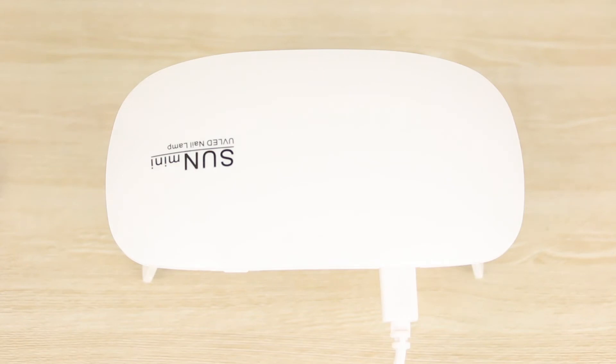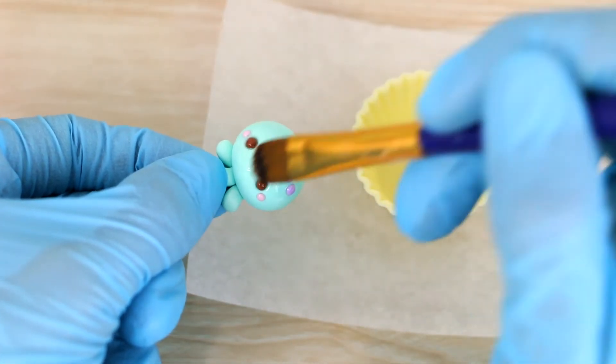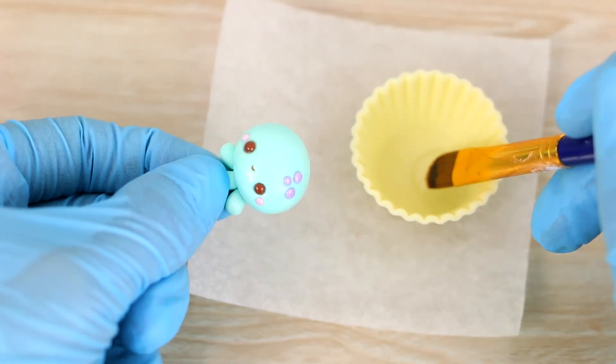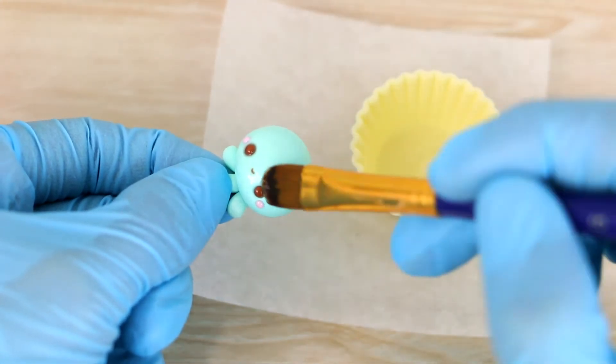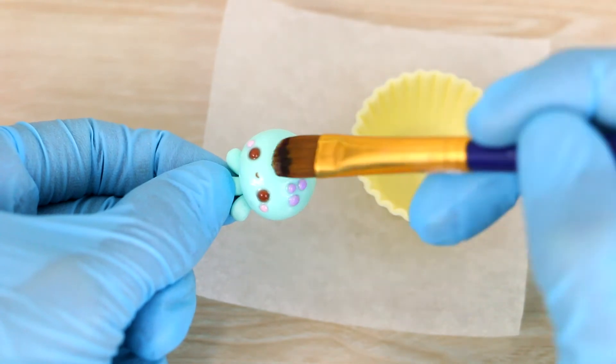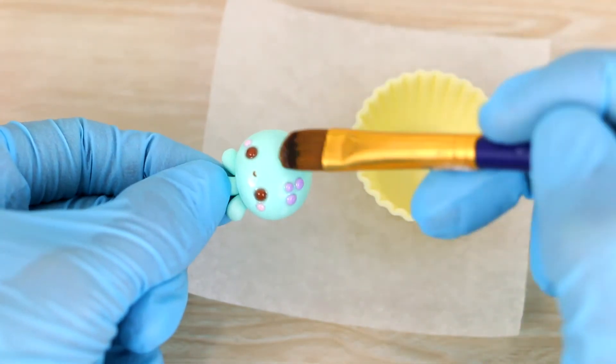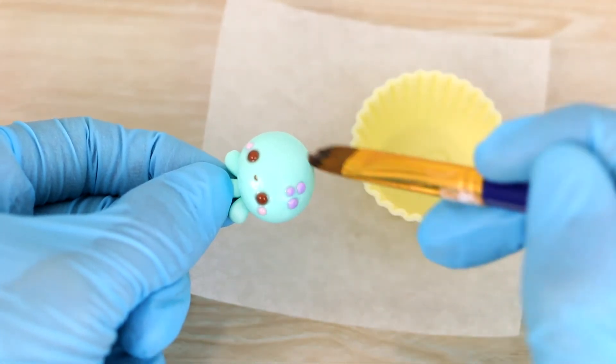So now it's time to add all the little clay bits. I'm going to glaze everything with some UV resin for some extra shine, and then cure that with my UV lamp.